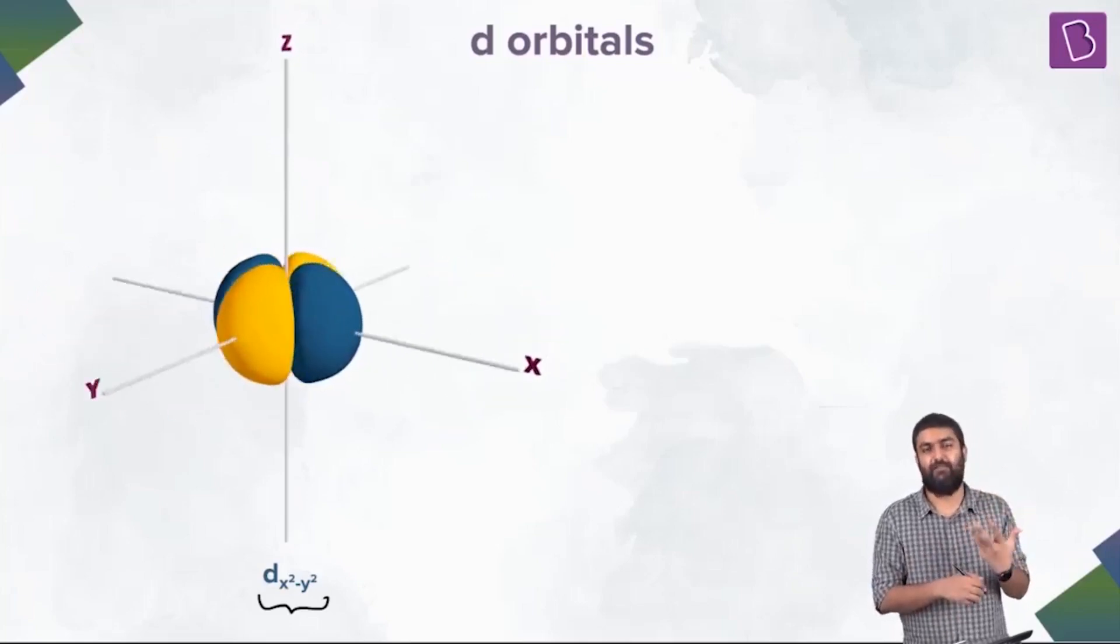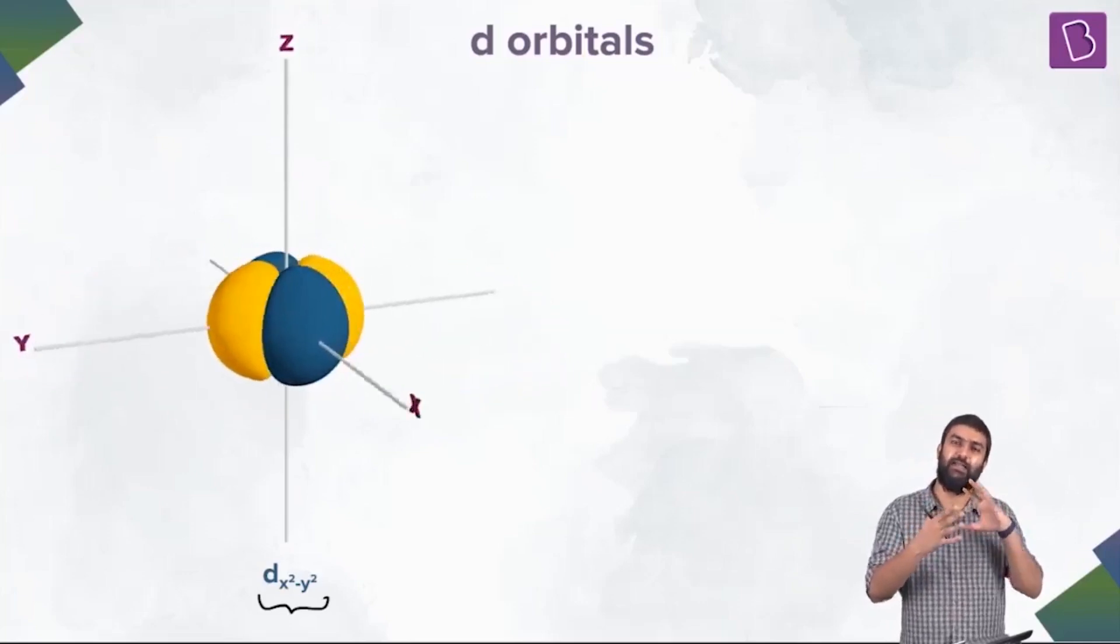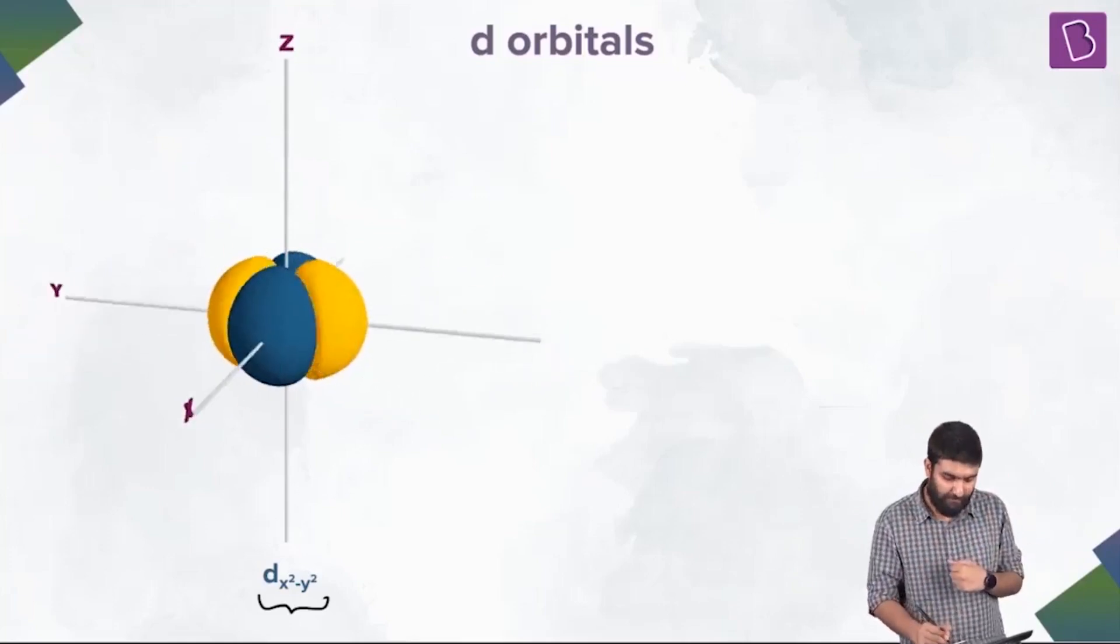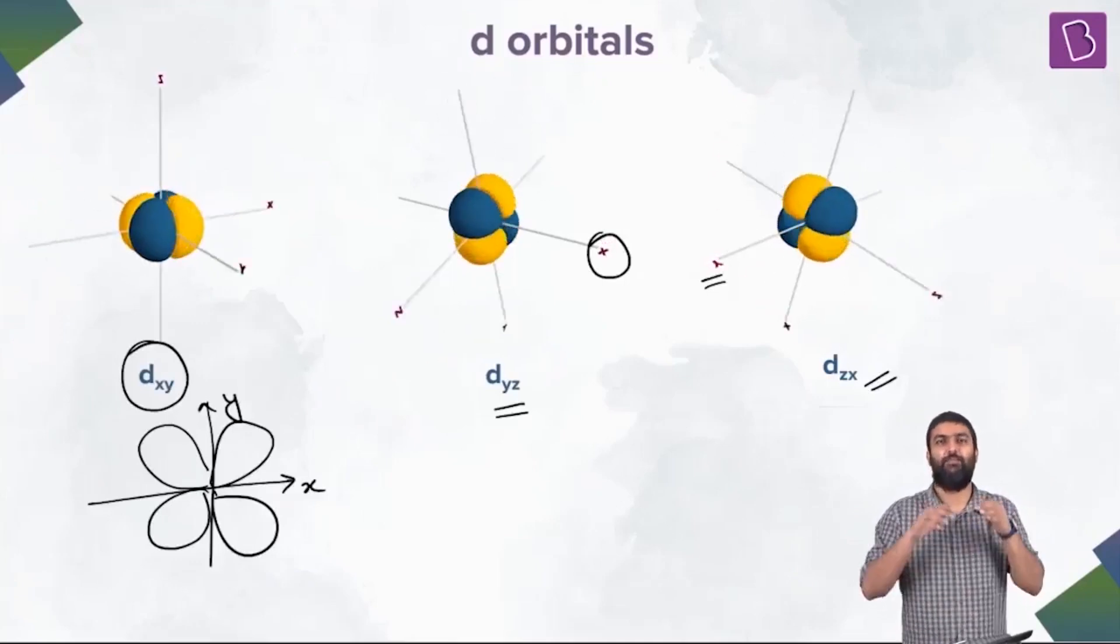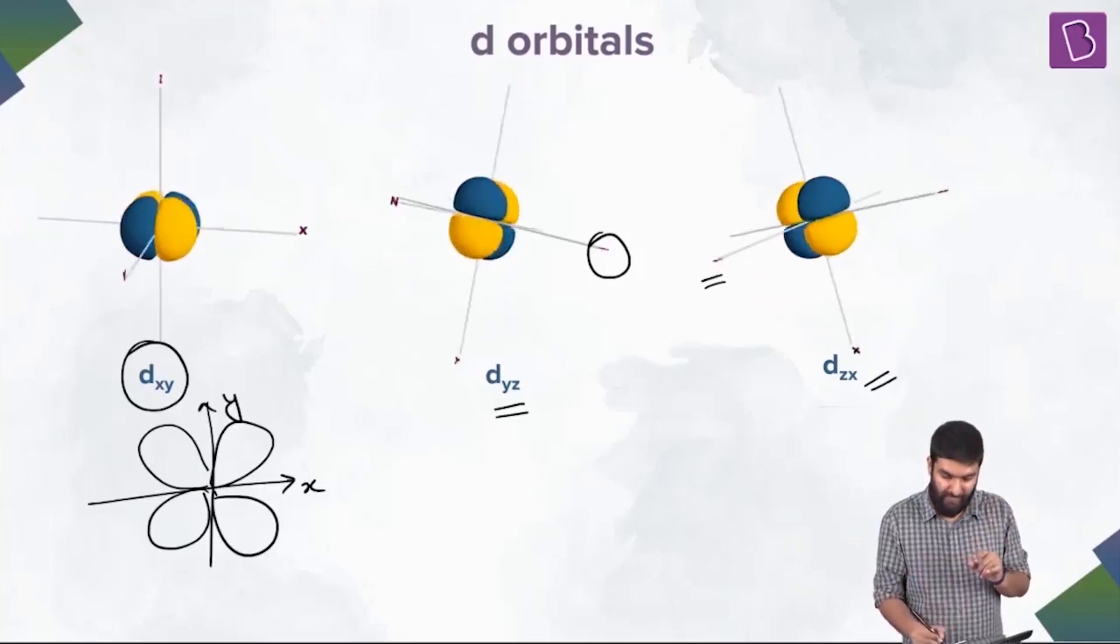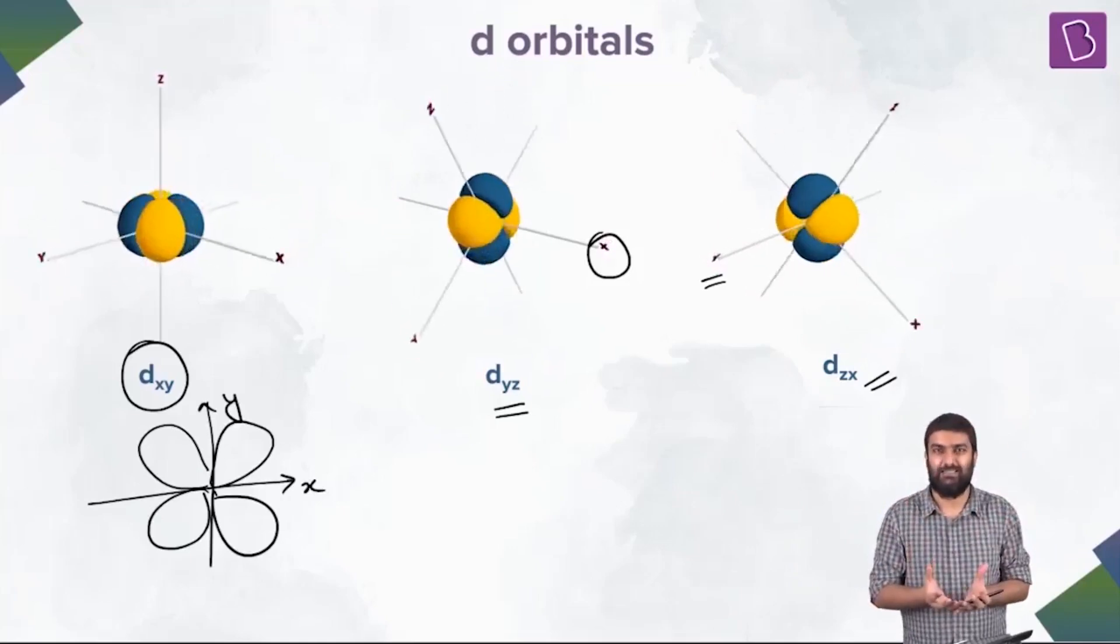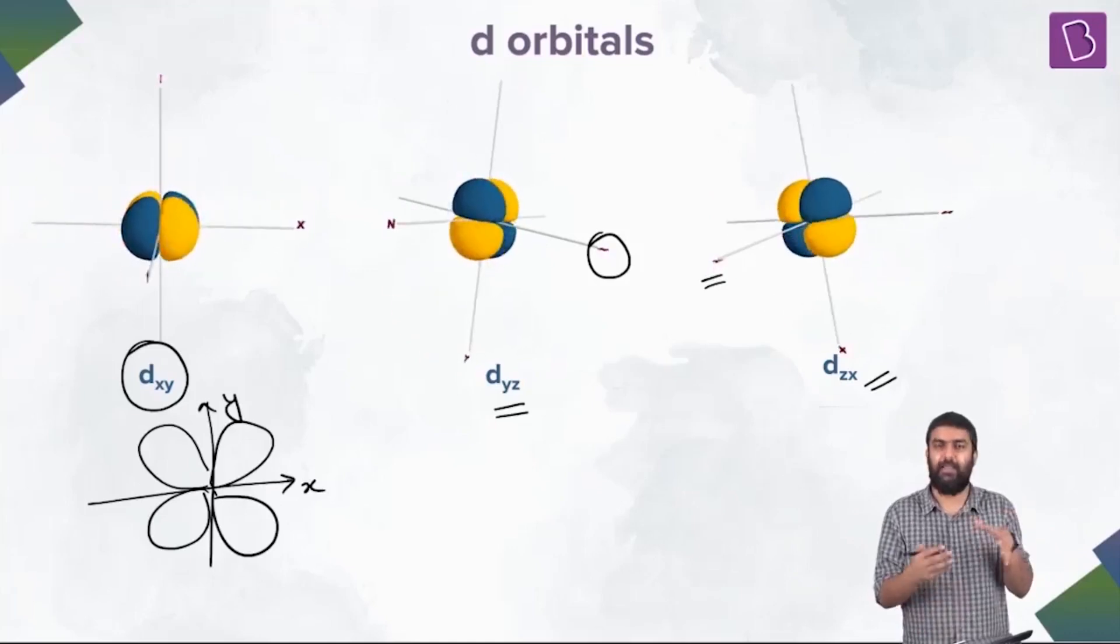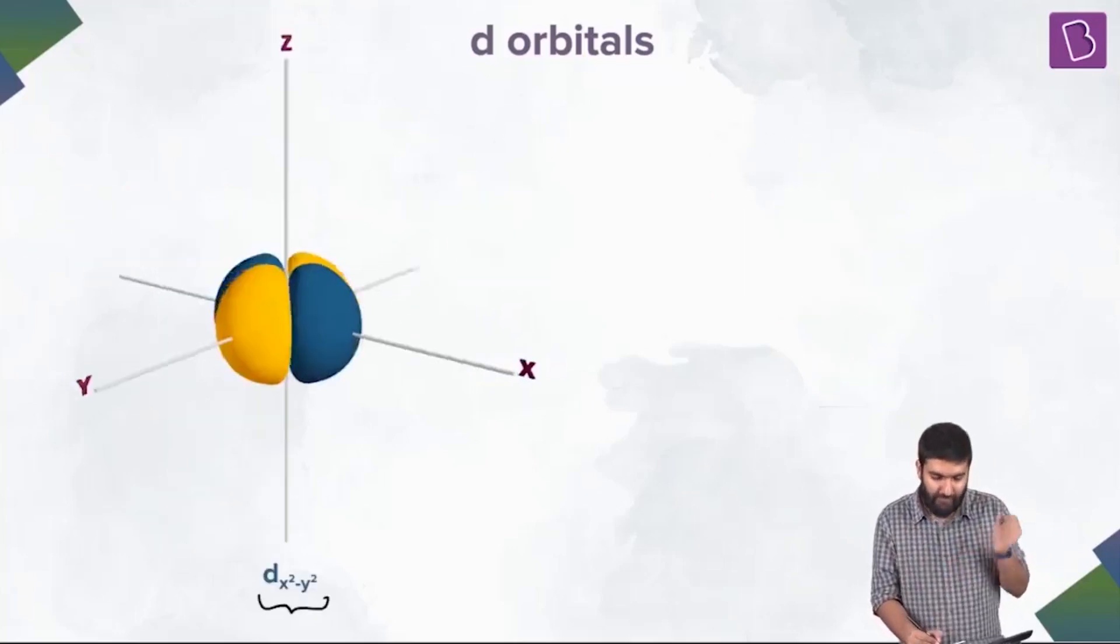Right now, you will just have to accept these names and remember where are the lobes of d in dxy, where are the lobes of d in dx squared minus y squared. For example, all three of these are similar that the lobes are between different, different axes. The lobes do not form along the axes. Dxy, yz, xz. And there is a similarity. xy between x and y, yz between y and z, xz between x and z. This here is different. It looks similar. But the difference is, the lobes here are passing through the x and y-axis. Notice that the lobes here are passing through the x and y-axis.